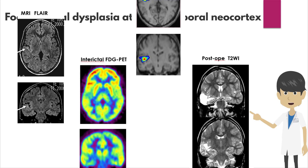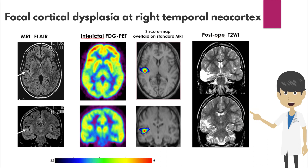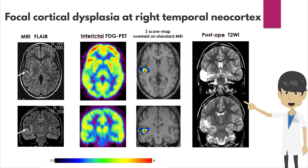Here are the results of the statistical image analysis of the previous quiz case. The statistically dominant hypometabolic area is shown as a color map in the right superior temporal gyrus, and a slight high signal is seen in the hypometabolic area on the MRI FLAIR image. Focal resection was performed and post-operative pathology confirmed focal cortical dysplasia.